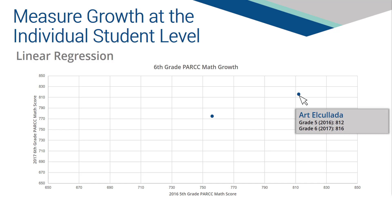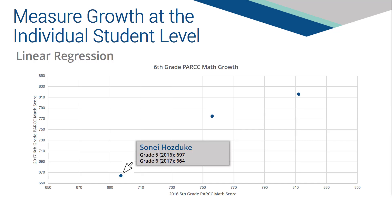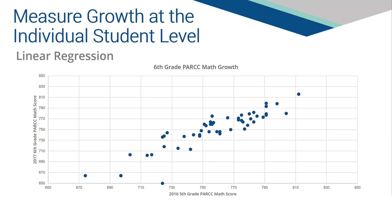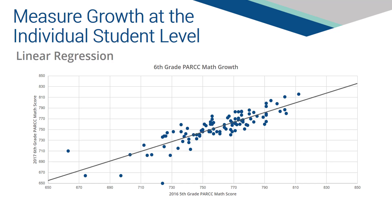We can plot a second student to the same graph, and a third student, and continue to plot additional students on the same graph. Ultimately, we can continue to plot all students across the state. Remember, the students plotted are only students that have the current year's PARCC score and last year's PARCC scores. A student that is missing a score would not be included in the analysis.